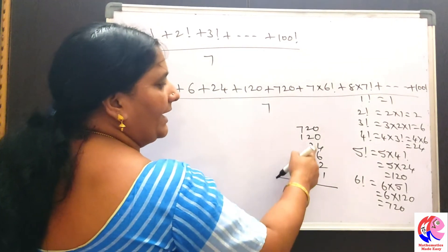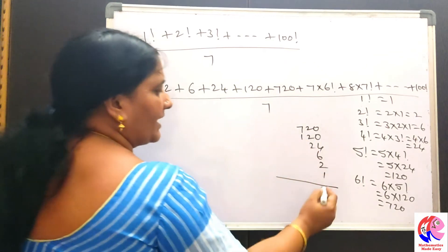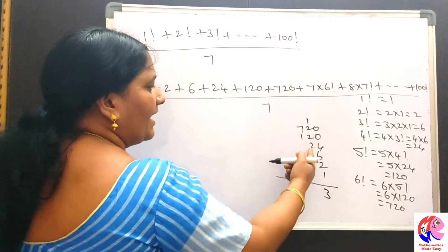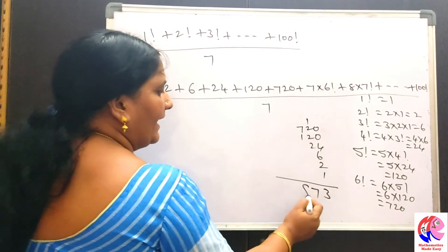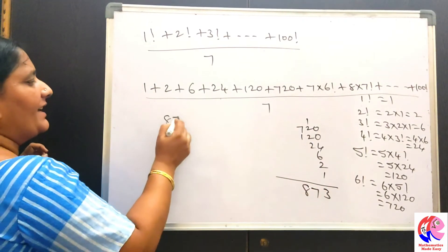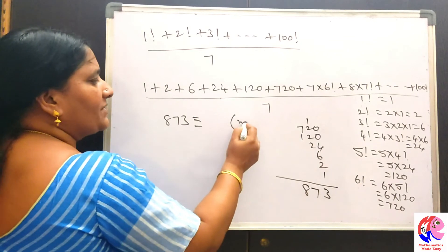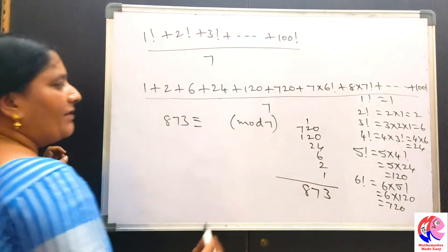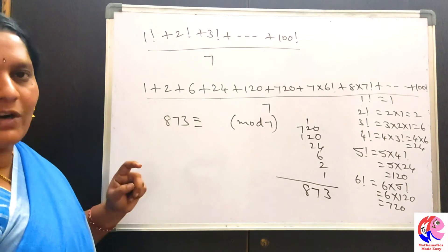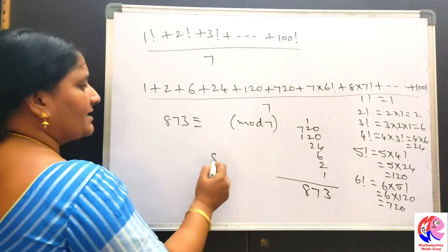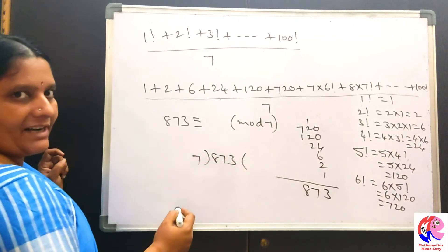Adding these up: 1 plus 2 is 3, plus 6 is 9, plus 24 gives 13 — carry the 1 — giving 33, plus 120 gives 153, plus 720 gives 873. So 873 is congruent to how much modulo 7? When 873 is divided by 7, what is the remainder?